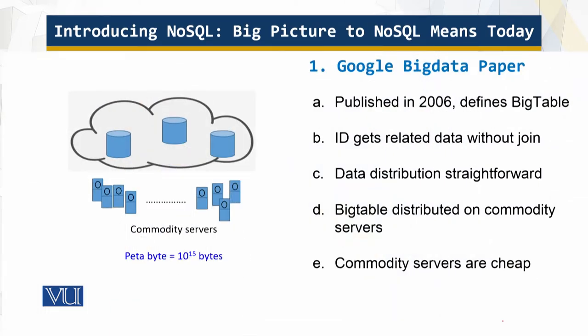Let's look at the Google Big Data paper in more detail. This paper was published in 2006. BigTable is a distributed storage system for managing structured data, designed to scale to very large sizes — petabytes of data across thousands of commodity servers.